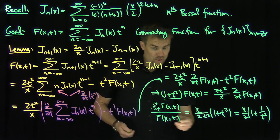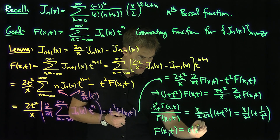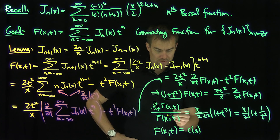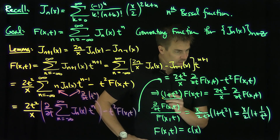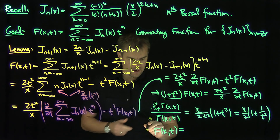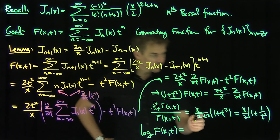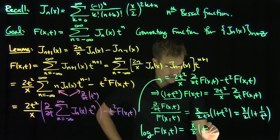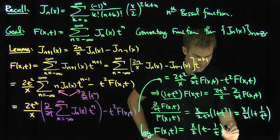Now I can integrate both sides with respect to t. This is a logarithmic derivative, so I'll take the logarithm. Integrating x over 2 times t plus 1 over t squared with respect to t gives the natural log of f of x and t equals x over 2 times t minus 1 over t, plus a constant c which depends on x.